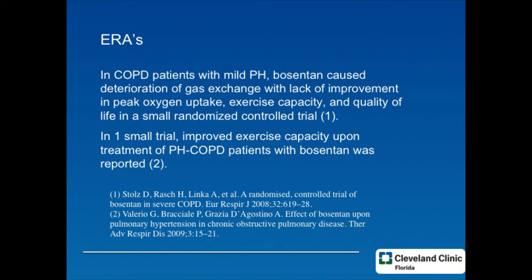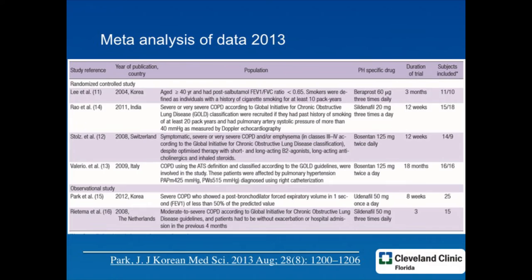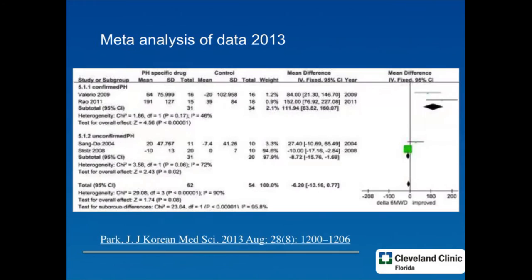How about endothelin receptor antagonists? Mixed experience. Bosentan in one study caused deterioration; in another small trial it improved exercise capacity. In a Korean meta-analysis of pulmonary hypertension drugs in COPD, the result was that overall there was no clear signal. However, there was a signal if the PH was confirmed with right heart catheterization. We see that often because what we think is PH actually ends up being left-sided disease, diastolic dysfunction, or fluid overload — which is why it's so important to do the right heart cath.